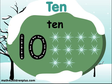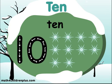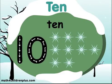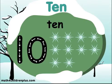See? That's how you count from 1 to 10. Here we have the number 10 — 10 snowflakes. 1, 2, 3, 4, 5, 6, 7, 8, 9, 10.